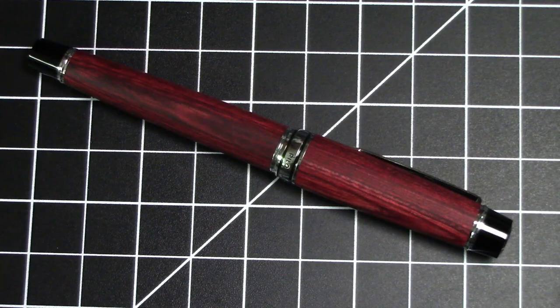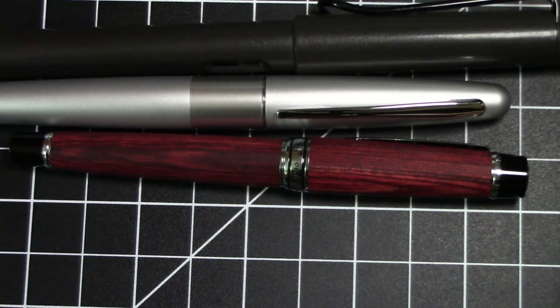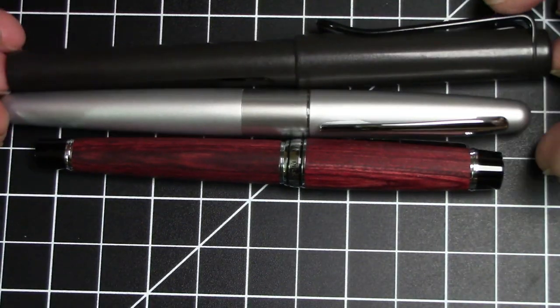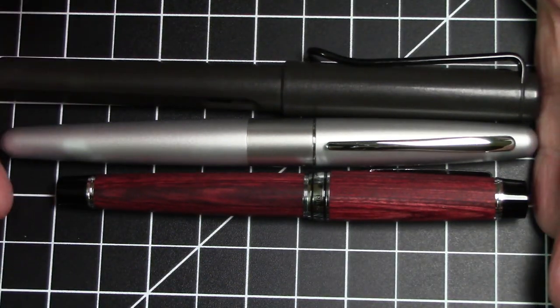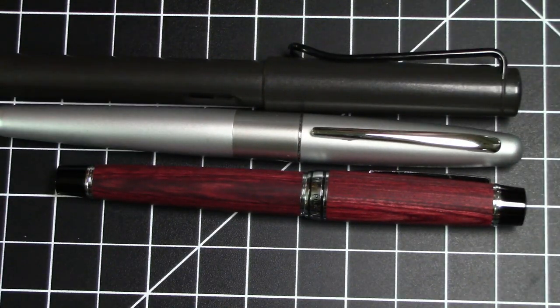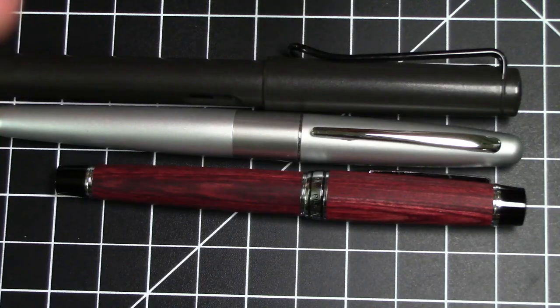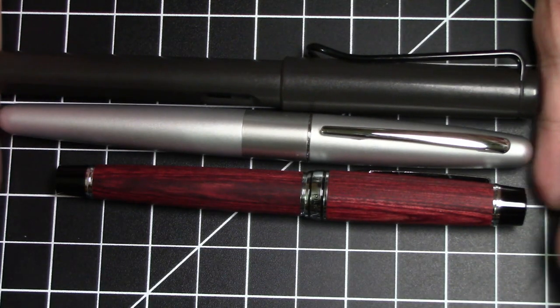When I say it's a small pen, I'm really kind of serious about that. So here it is compared to a Lamy Safari and a Pilot Metropolitan. As you can see, it is quite a bit smaller than these guys. So it's a small pen, but it is wood. Not a heavy material. Only weighs in at 18 grams.